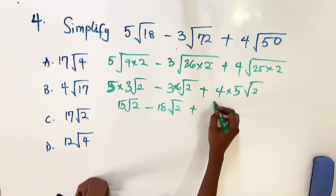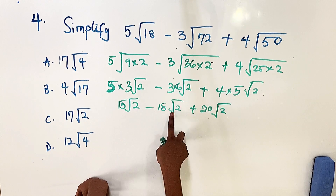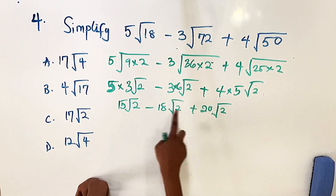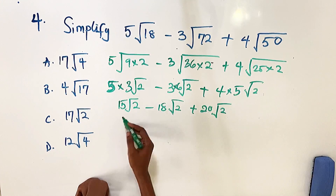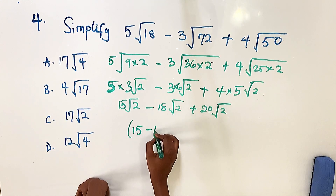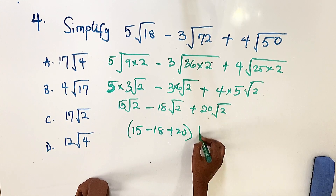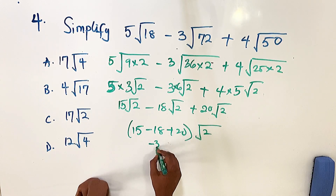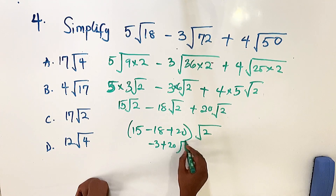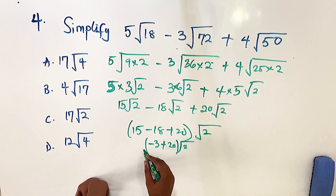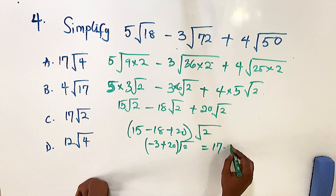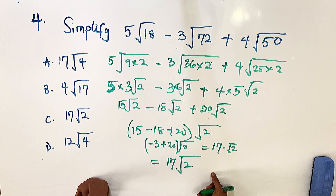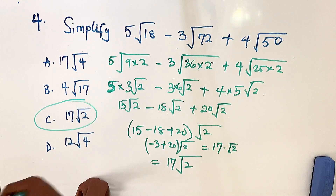We now have 15 root 2 minus 18 root 2 plus 20 root 2. Since they all have root 2 we operate on the coefficients: 15 minus 18 plus 20. That gives minus 3 plus 20, which equals 17. So the answer is 17 root 2, option C.